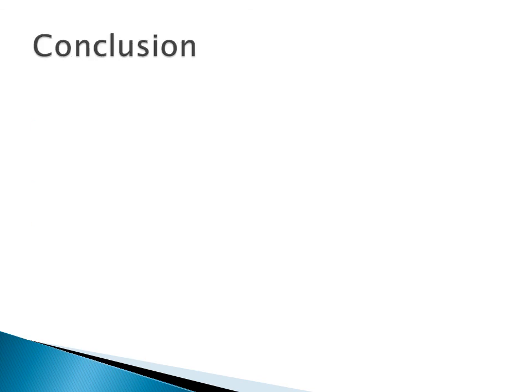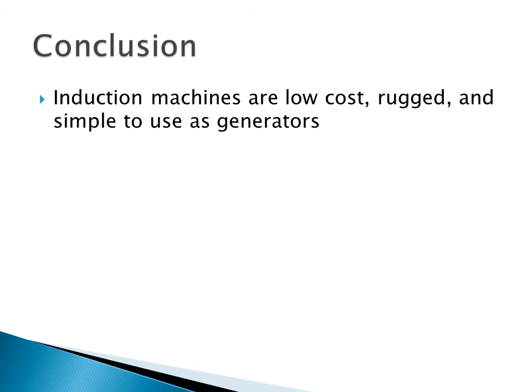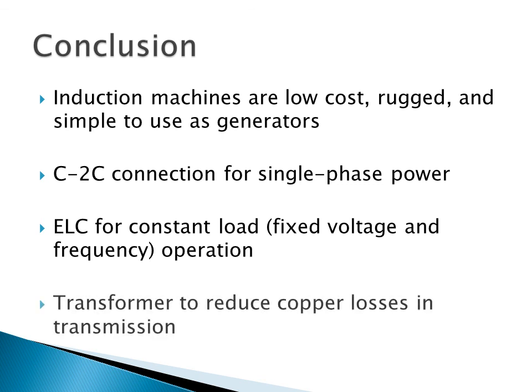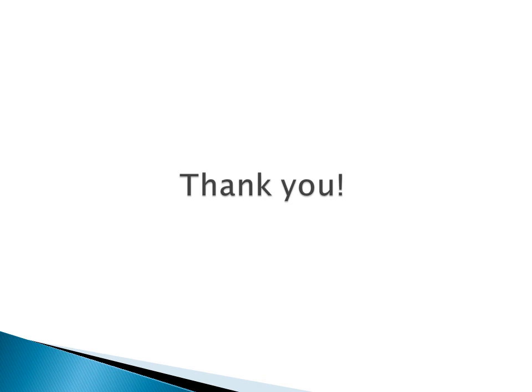To conclude, we have presented that the induction motors are low-cost, rugged, and very simple to use as generators. They can be found worldwide, and they are robust and well-suited for the application. We can get single-phase power from a three-phase machine by proper selection of a capacitor bank, and proper connection in the C2C configuration. We can use a basic electronic load controller to operate a constant load to fix the output voltage and frequency. And we can use a transformer to reduce copper losses in transmission over longer distances. And that concludes the presentation. I'd like to thank you for your time, and if you have any comments or questions, please leave them below in the comment section.